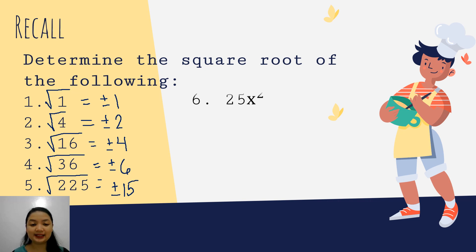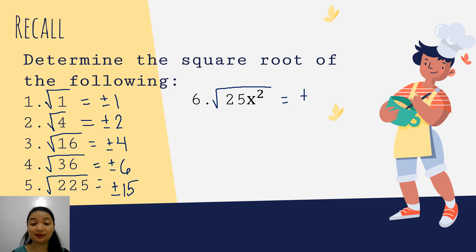Now let's add some variables. What is the square root of 25x squared? That is positive, negative 5x. We get the square root of 25, which is 5, and then for x squared, we divide the exponent by 2, which gives us x.